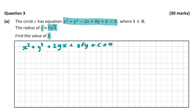This formula is in the log tables if you're not sure of it or don't remember it. When a circle is in this form, the radius can be written as the square root of g squared plus f squared minus C.